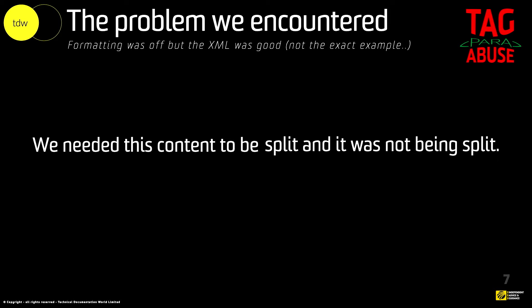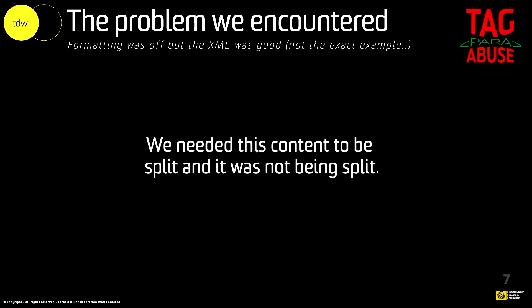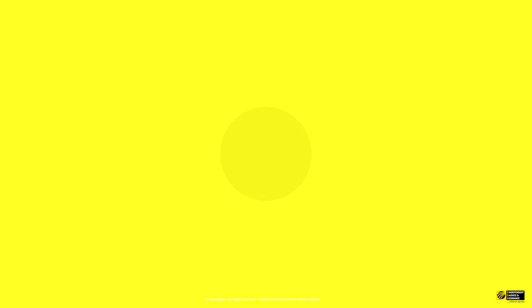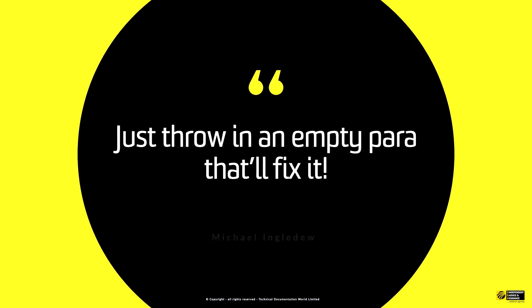I can hear lots of you screaming at your devices right now saying, why are you bothered about it? But there is a very specific reason why we need to do that. We have a piece of content which is structurally valid and has a load of XML going on behind it, and it was being presented in one long linear line. What we actually needed was for it to be presented split over a couple of lines. And the only way to force that split is either to go and change the XML structures so that the style sheets can pick up on those changes, or — as I said — just throw in an empty paragraph. That'll fix it.